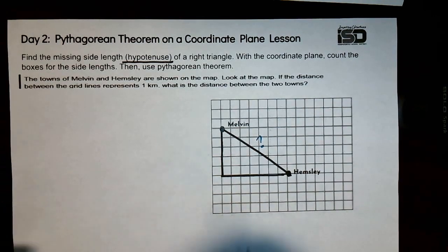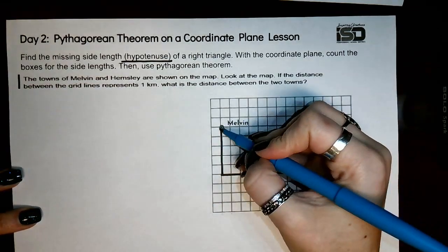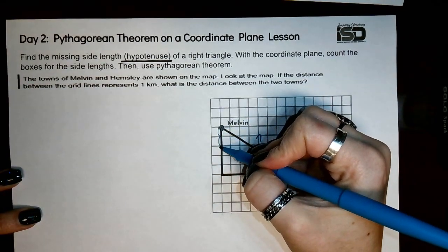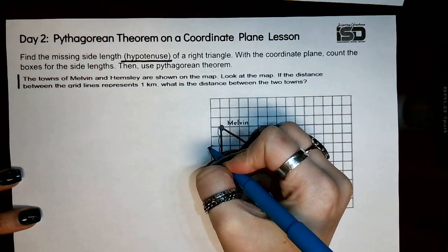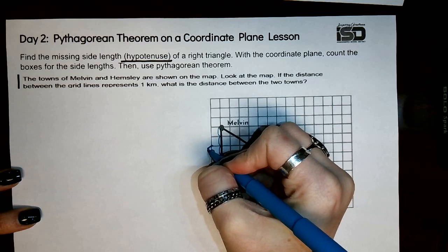So I'm going to go ahead and count these. Remember, you do not count just the lines. I'm going to count one, two, three, four, five. So this side length is five units.